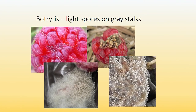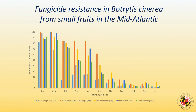Botrytis is a common disease that affects different small fruits. Spores are produced from the fruit and spread by wind to infect other healthy fruit during the same season. This fungal pathogen has a tremendous ability to develop resistance to different active ingredients.